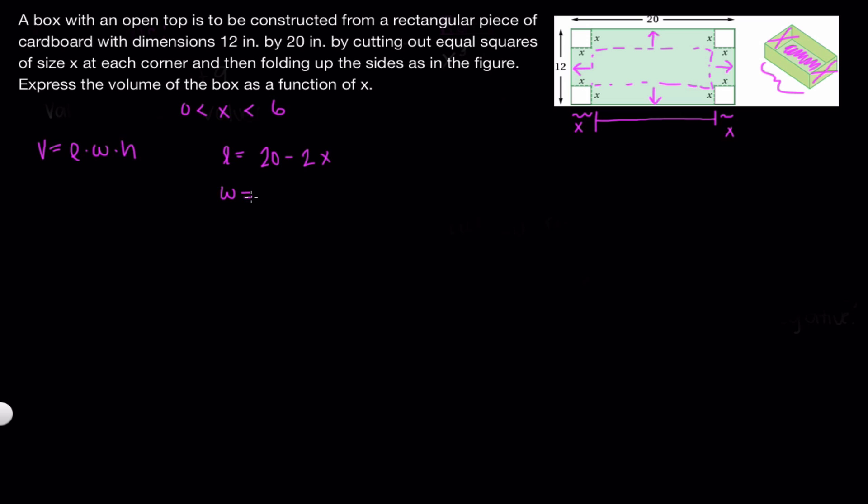Similarly, finding the width, which would be this part on our box, we can say that it is 12 minus 2x.